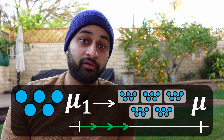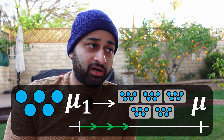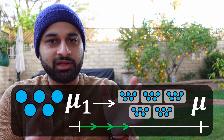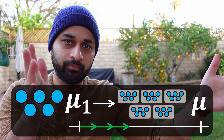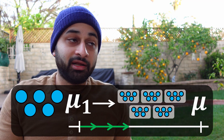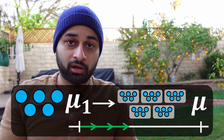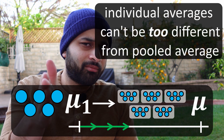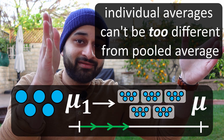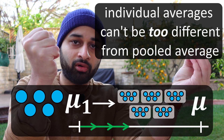In statistical terms, we call this regularization — you might be thinking of L1 or L2, lasso or ridge regularization. It's not necessary to understand those for this video, but it's the same idea: we don't believe our parameters or estimates can be so extreme, so we regularize them by pulling them towards some number. In the standard regularization framework that's usually zero; in this framework, it's the average across all the coffees, because we don't think that pooled average is so susceptible to the outlier issue.